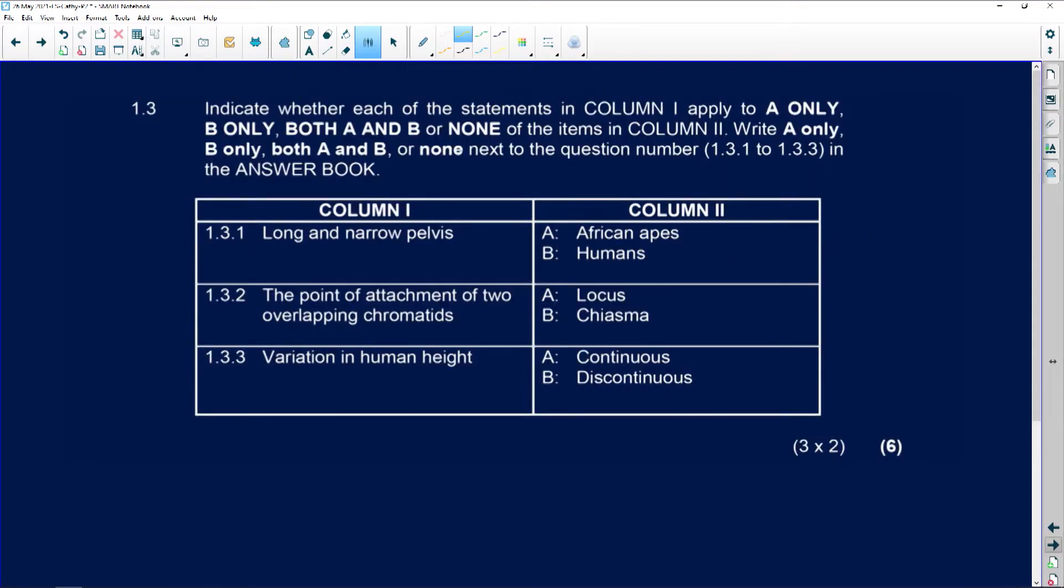So next question, 1.3. I don't like these questions. Learners always do so badly in these. Indicate whether each of the statements in column one applies to A only, B only, both A and B, or none. Okay, not hard, but it's very confusing sometimes.